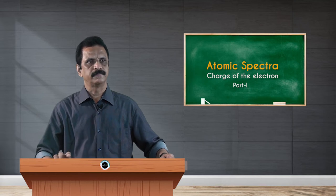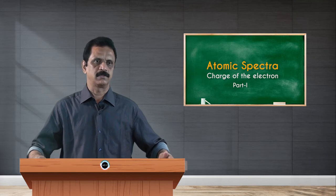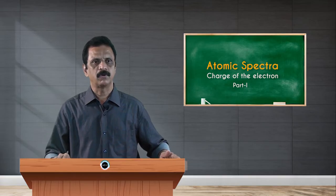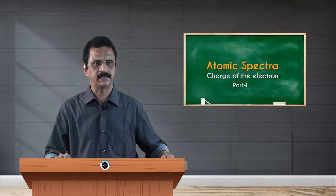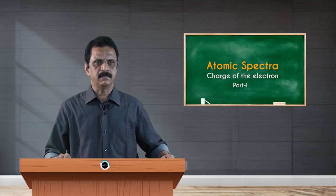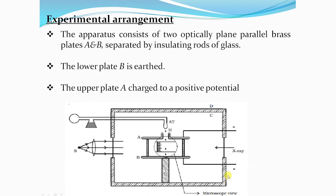The apparatus mainly consists of two parallel brass metal plates, A and B, separated by an insulating rod. The lower plate is earthed and the upper plate is charged with positive potential — in other words, a potential difference or electric field is maintained between the two metal plates. This system is placed inside an evacuated chamber D, around which a constant temperature oil bath is maintained. There is an atomizer arrangement, a provision to illuminate the region using an arc lamp, a provision to send X-rays into the chamber, and it is fitted with a scale so that the movement of the oil drops can be observed.